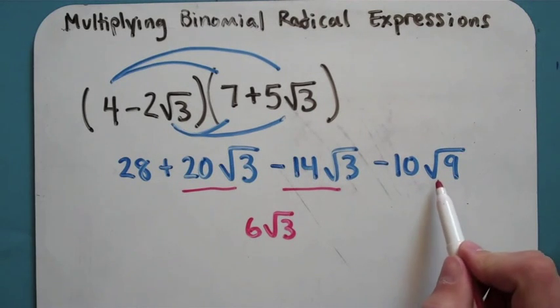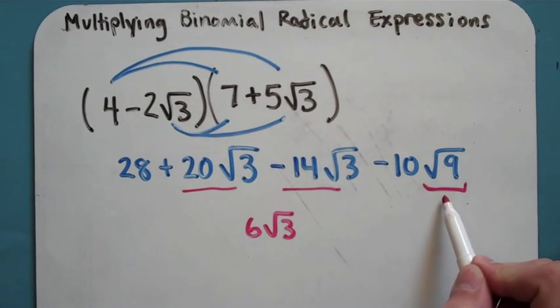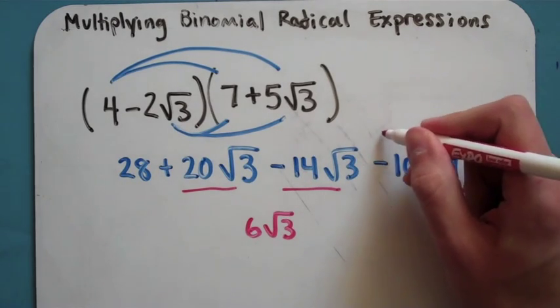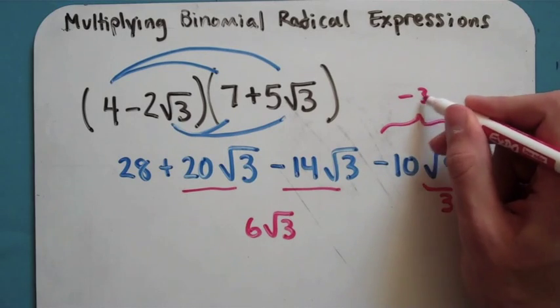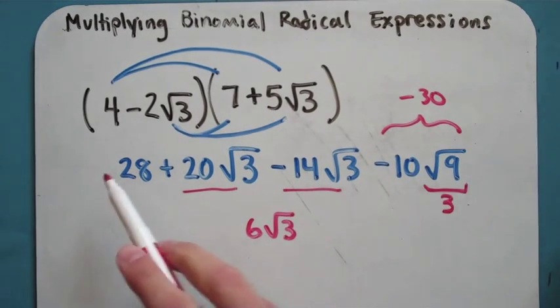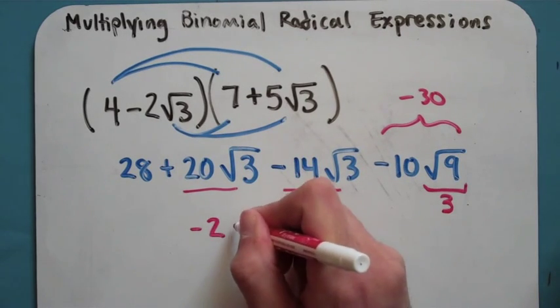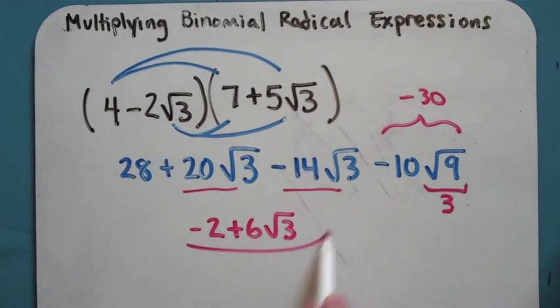And 10 root 9, the square root of 9 is really equal to just plain old 3. So this is really a negative 10 times 3, which is negative 30. This whole piece here is just a minus 30 in disguise. 28 minus 30 is negative 2. So what I'm looking at here is negative 2 plus 6 root 3.